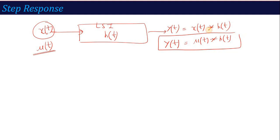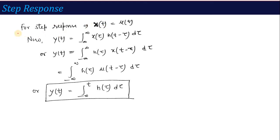This y(t) calculated when x(t) is the unit step input is called the step response. So, if you ask what is meant by step response: if in a system the input equals unit step input, then the output or response of the system at that time is called the step response. For step response, x(t) equals u(t).